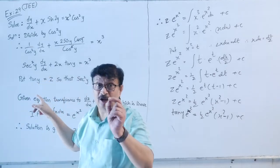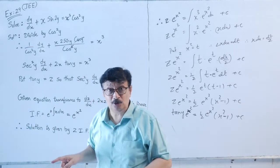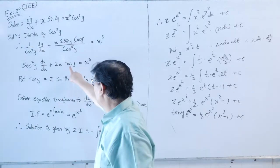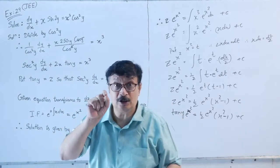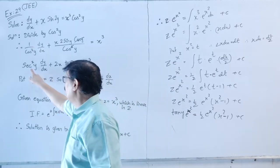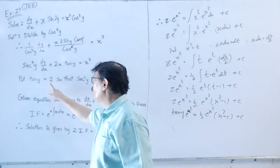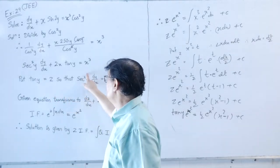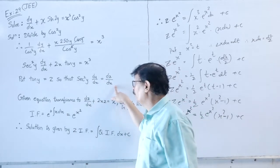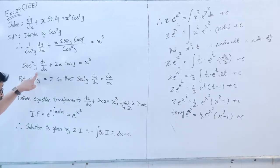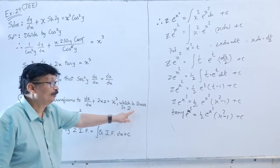Put tan(y) = z, so sec²(y)·(dy/dx) = dz/dx. The given equation becomes dz/dx + 2x·z = x³. This is now linear in z.